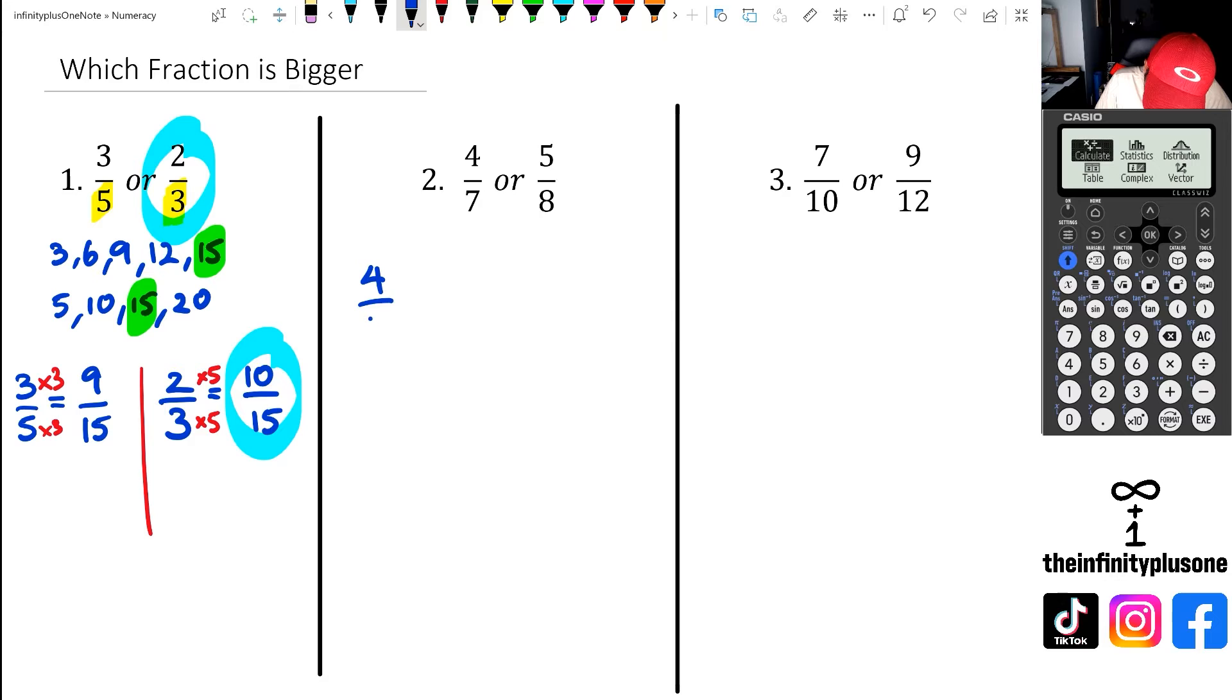All right. So if I was to do four over seven or five over eight, what I'm going to do here is simply multiply the denominator by eight and the numerator by eight. And as for the five over eight, I'm going to multiply the denominator by seven and also the numerator by seven. And by doing this, I've got four times eight, which is 32, over seven times eight, which is 56.